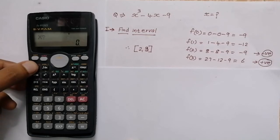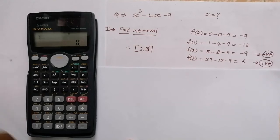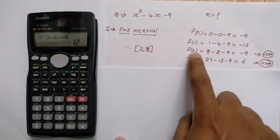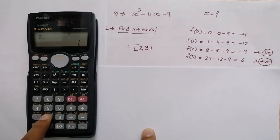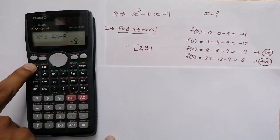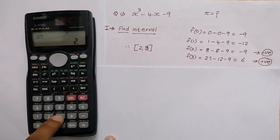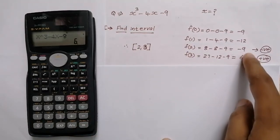To substitute values in the calculator, press the CALC button, which is under the Shift button. It asks for X, so press 1 then equal to — we get minus 12. For f(2), press CALC then 2 then equal to — we get minus 9. Then press CALC, press 3, press equal to — we get 6.